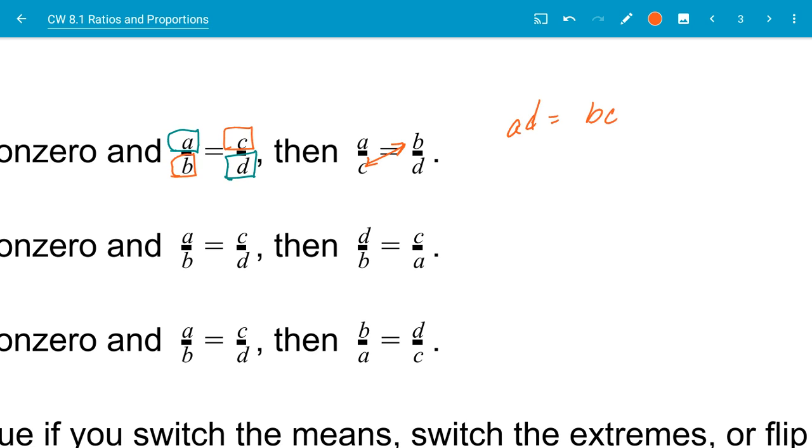When I cross multiply, I still get A times D, which is my extremes. Remember, here are my extremes. These are my means. And so it still equals AD is equal to BC. So it's still the same as in the cross multiplication theorem. But I've just swapped out my means there.